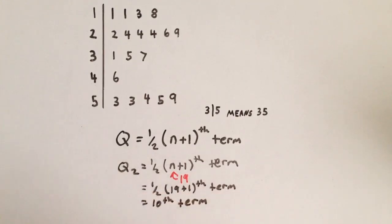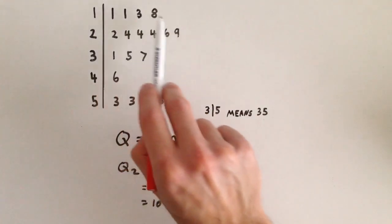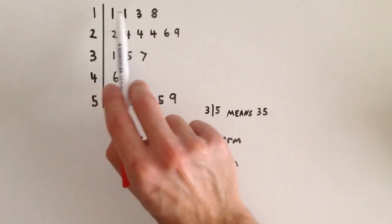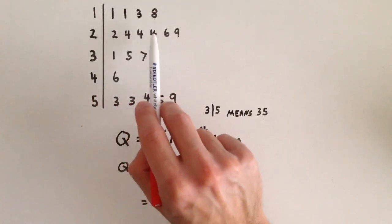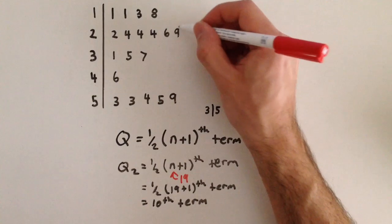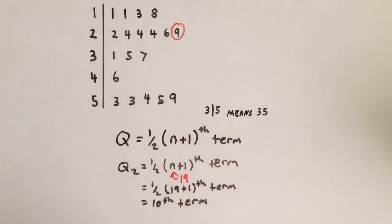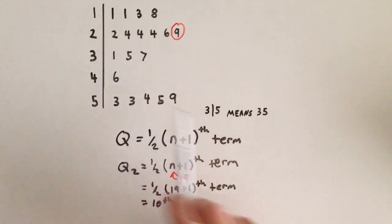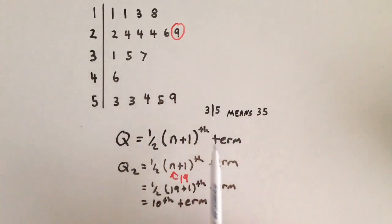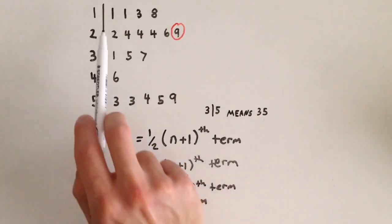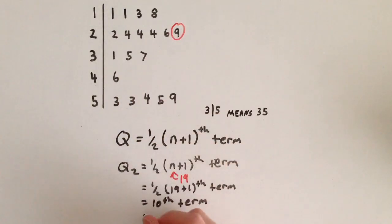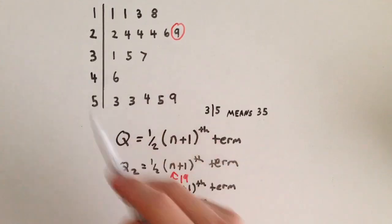Our median Q2 is located at our 10th data value. We always count in ascending order: 1, 2, 3, 4, 5, 6, 7, 8, 9, 10. Here is our Q2. Remember, to read off a stem and leaf plot, you look at your key — 3 | 5 means 35. So we have 2 | 9, meaning 29 is our median for this example.